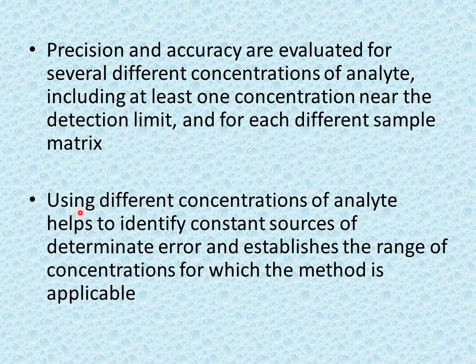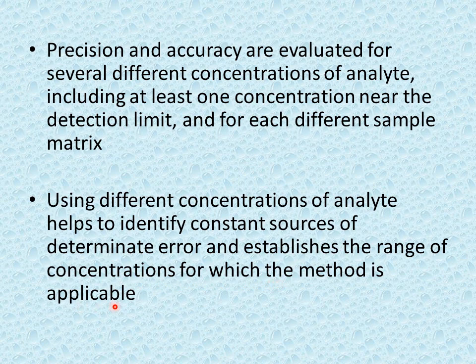Using different concentrations of analyte helps to identify constant sources of determinate error — so if there is any error, we are able to find it. It also establishes the range of concentrations for which the method is applicable, allowing us to determine the concentration range over which the method is valid.